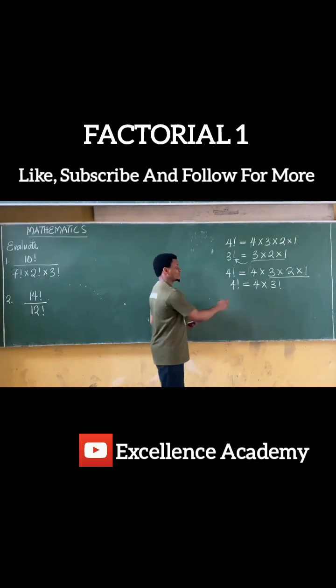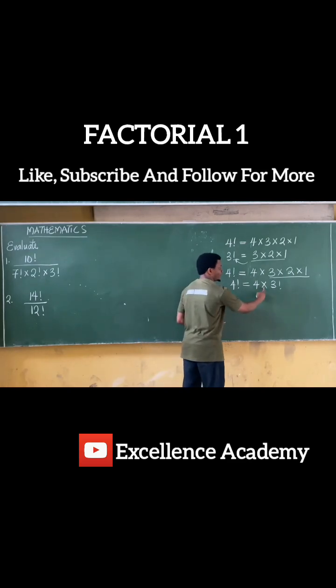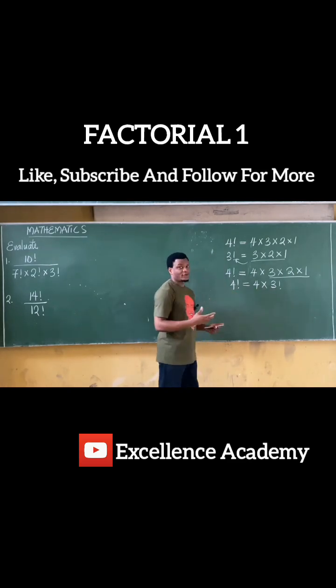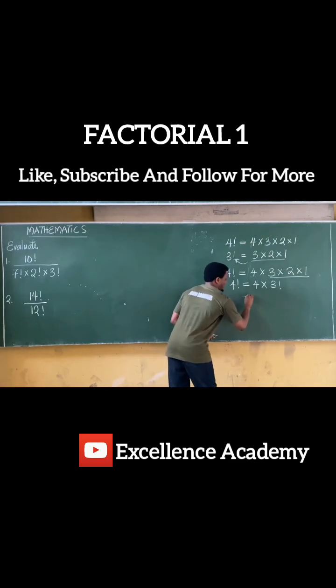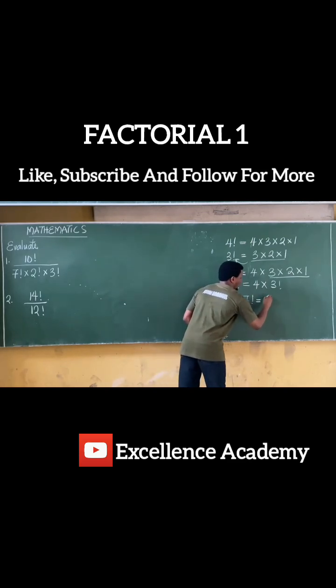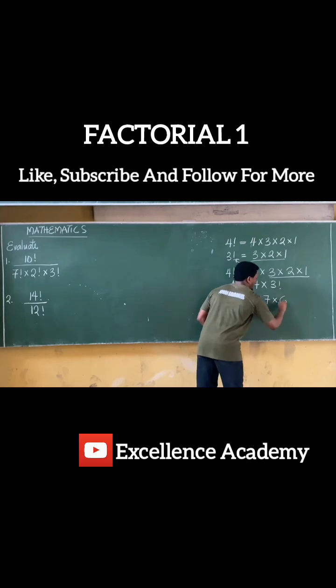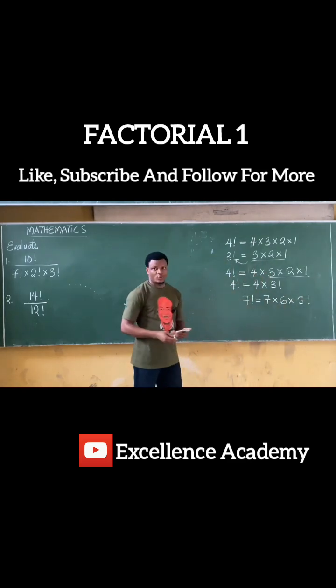Now this tells you that a particular factorial can also be expressed as the multiple of another factorial, of course, of a lower figure. In essence, we can say that 7 factorial is equal to 7 times 6 times perhaps 5 factorial. This is also correct.